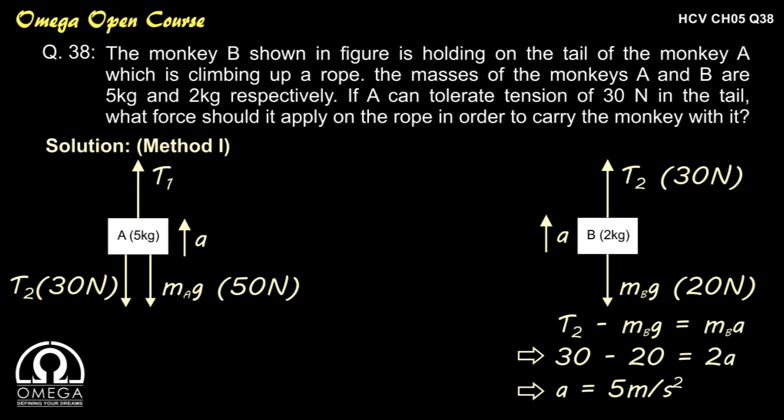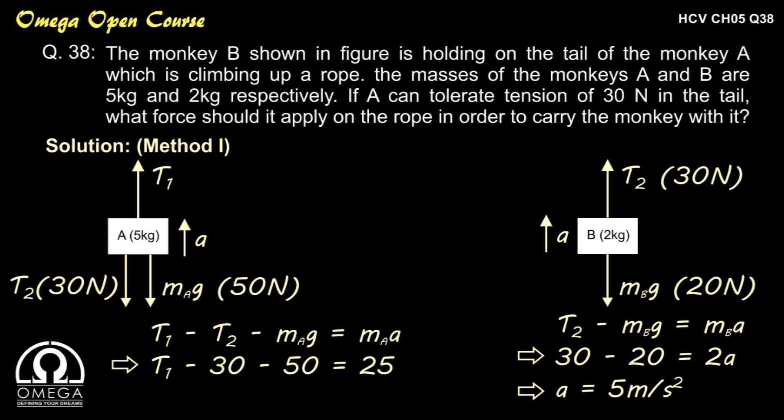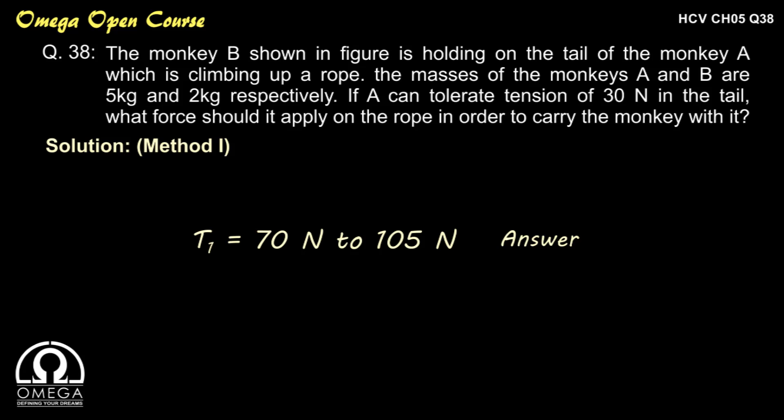In the free body diagram of monkey A, the forces acting downward are T2 = 30 N (maximum tail tension) and gravitational force of 50 N, while it moves upward with acceleration 5 m/s². Writing forces in the vertical direction: T1 − T2 − M_A × g = M_A × A, which gives T1 − 30 − 50 = 25 N, thus T1 = 105 N. Therefore, the minimum force monkey A can apply on the rope is 70 N and the maximum is 105 N, so the monkey can apply between 70 N and 105 N on the rope to move up.